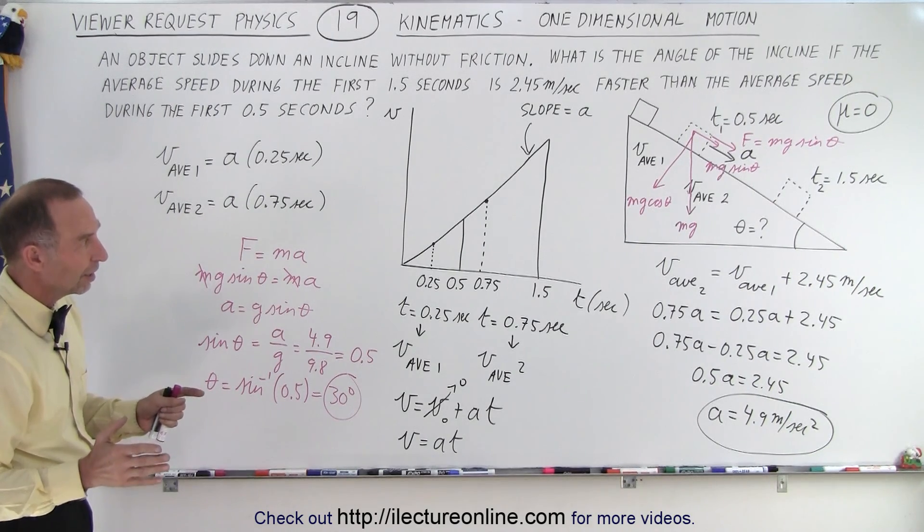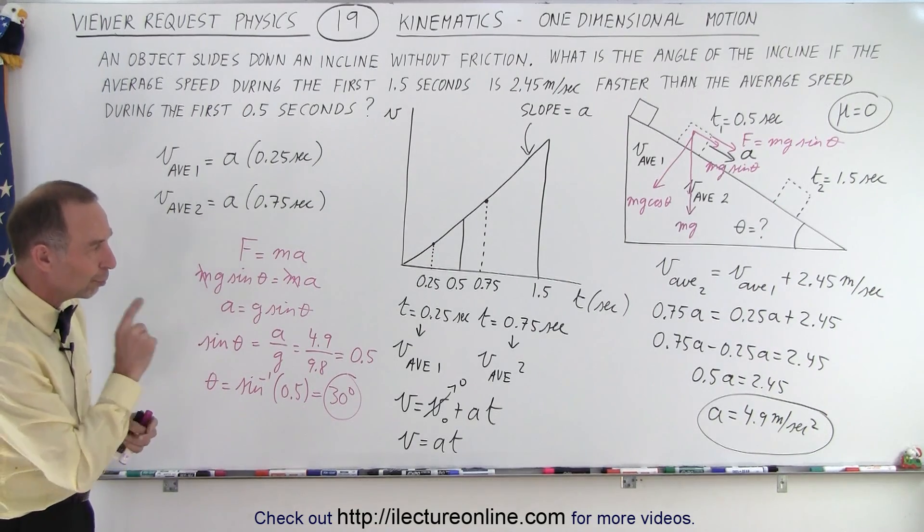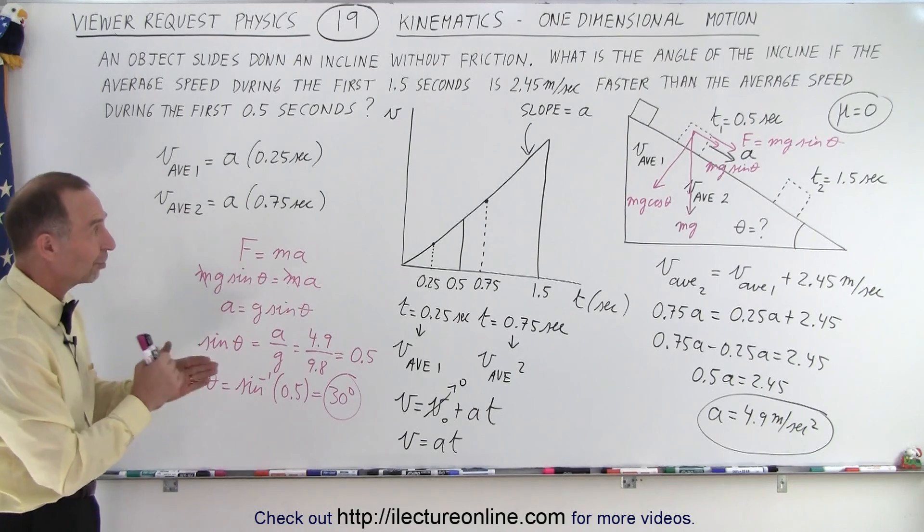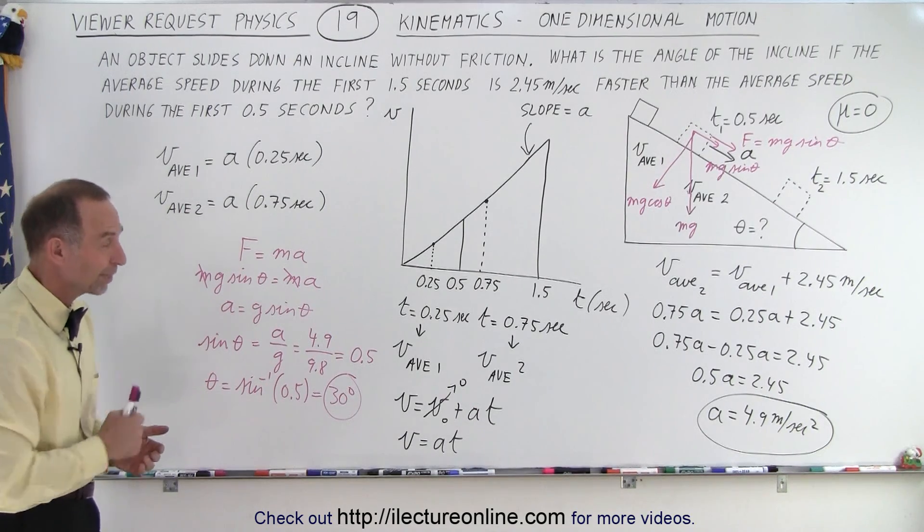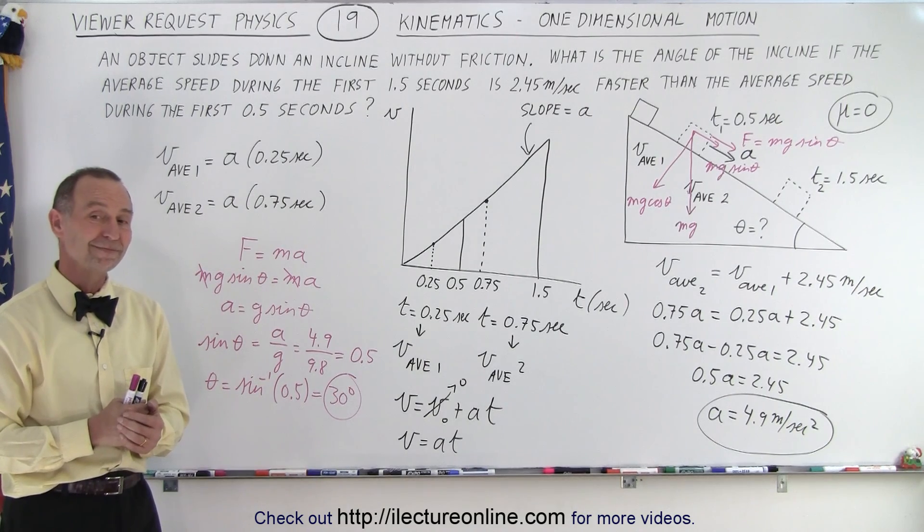And so the incline has to have an angle of 30 degrees for the condition to be true that the average velocity of the first 1.5 seconds is 2.45 meters per second faster than the average velocity for the first 0.5 seconds. And that is how it's done. Our viewers have interesting problems. That's a very interesting problem.